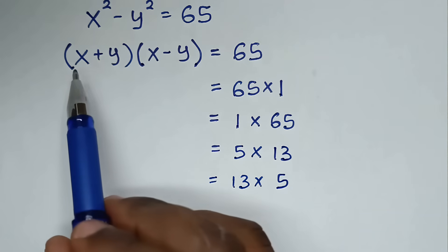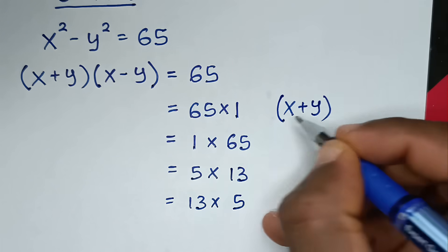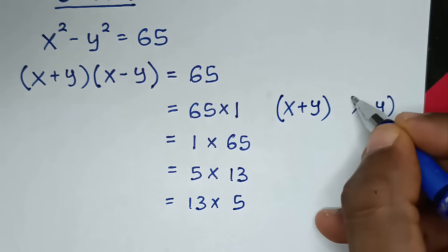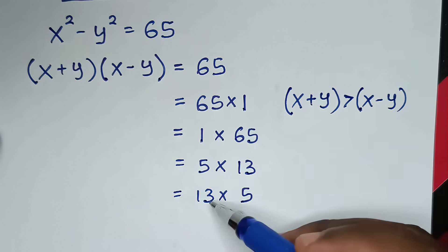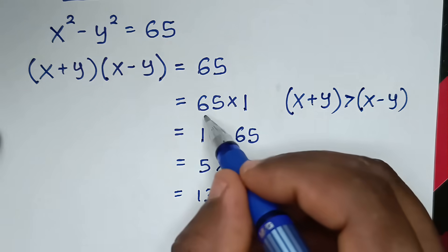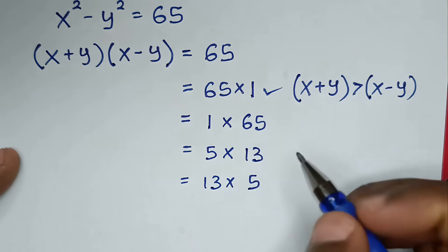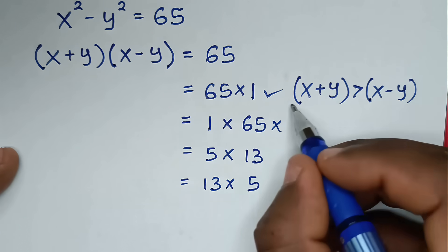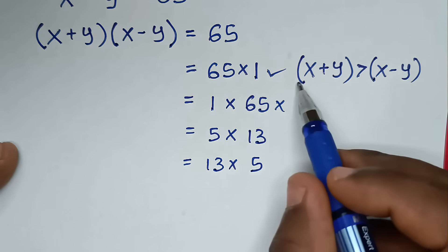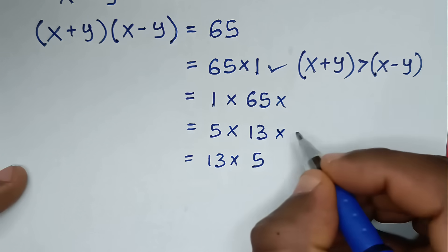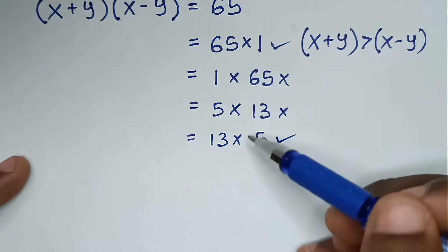Now, let's compare x plus y with x minus y. We can see that x plus y is greater than x minus y, so the first factor should be greater than the second. For 65 times 1: 65 is greater than 1, so this selection is okay. For 1 times 65: 1 is less than 65, so this is not okay. For 5 times 13: 5 is less than 13, so this is not okay. For 13 times 5: 13 is greater than 5, so this is okay.